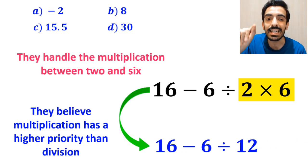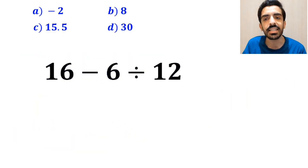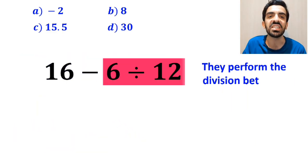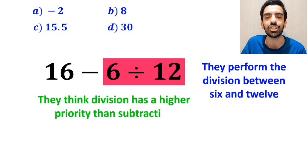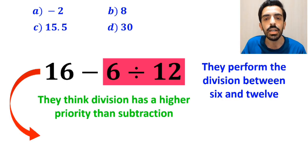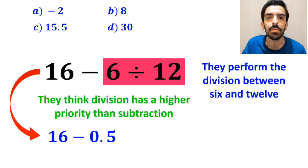In the final step, they perform the division between 6 and 12 because they think division has a higher priority than subtraction. So, they simplify this expression to 16 minus 0.5, which ultimately gives them the answer 15.5.